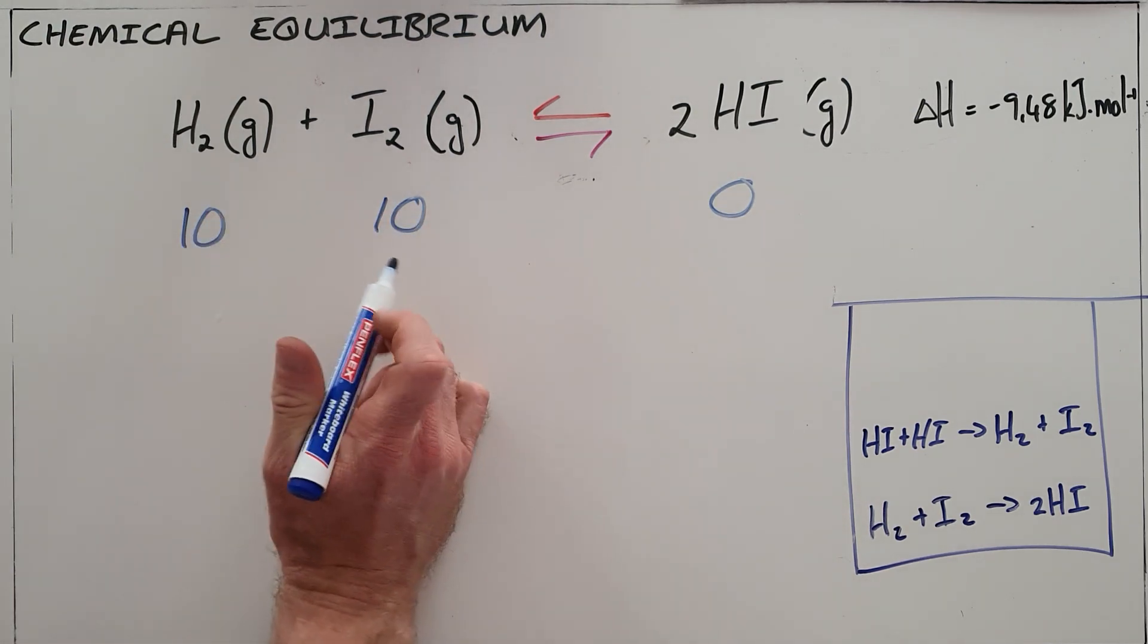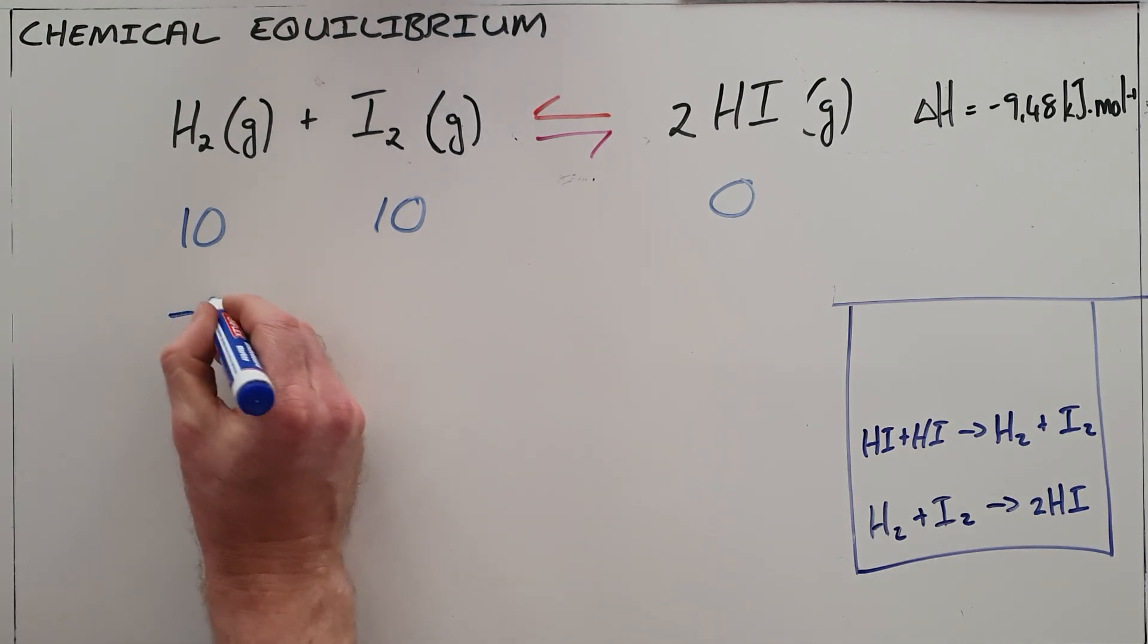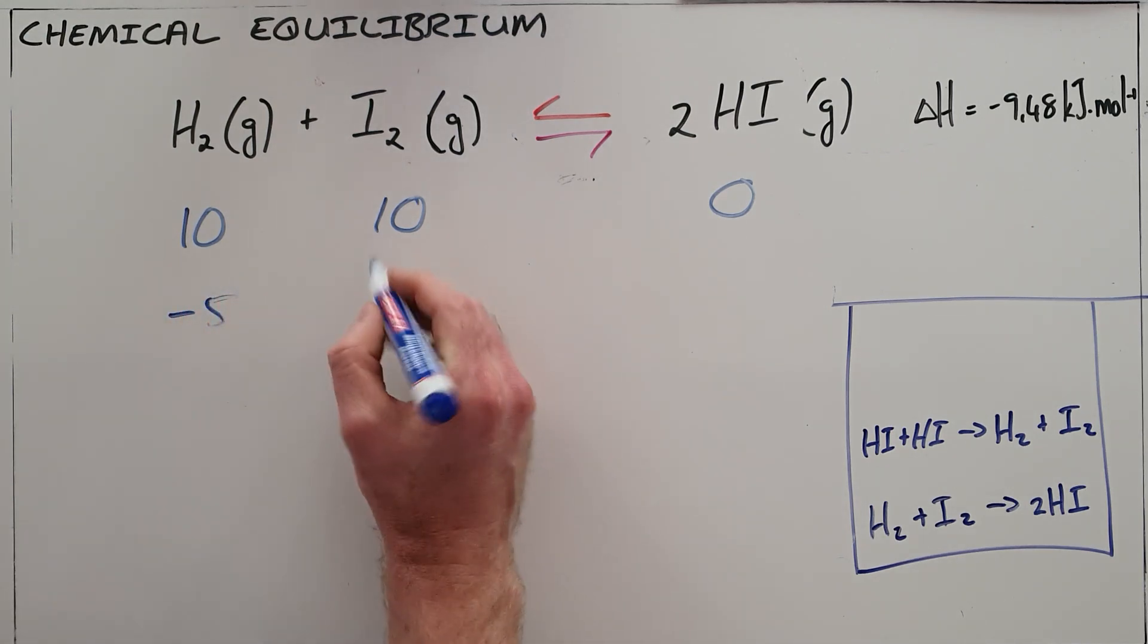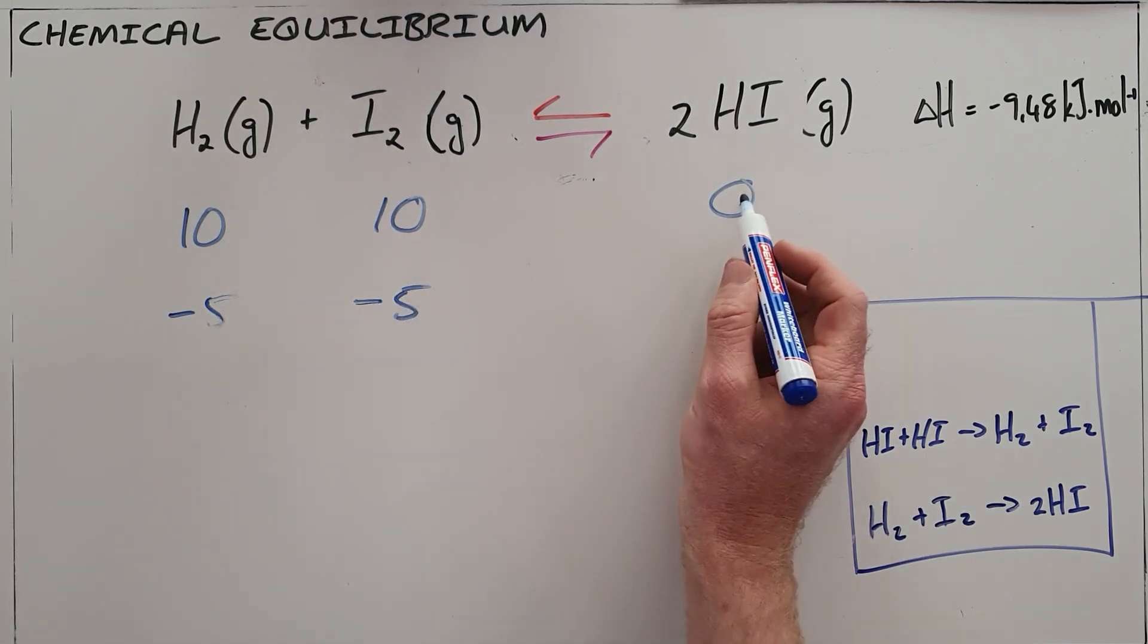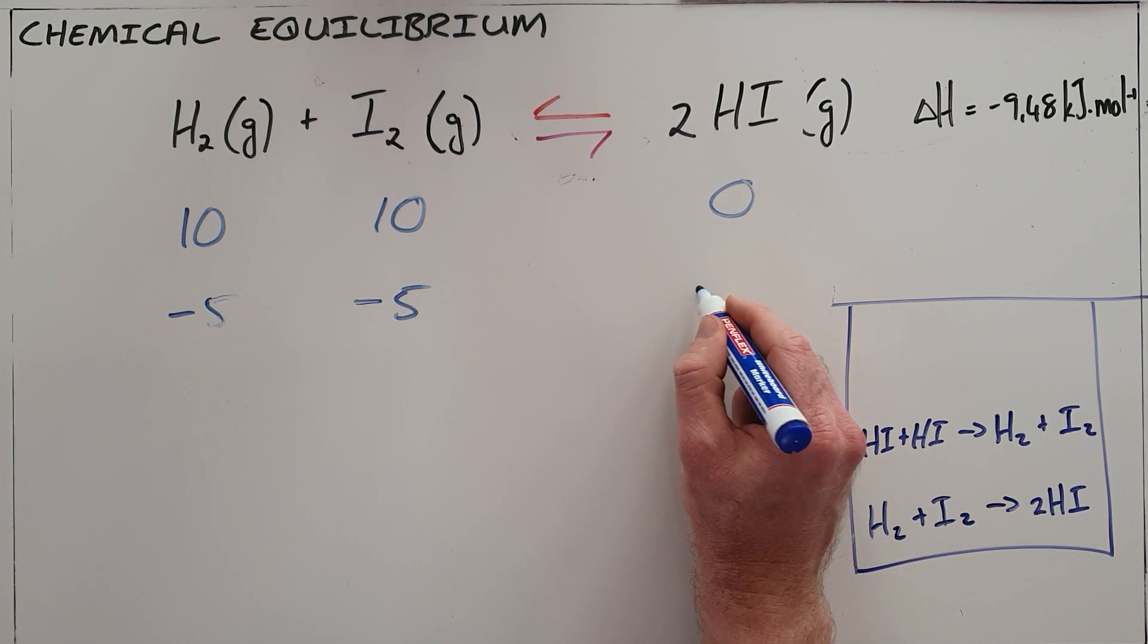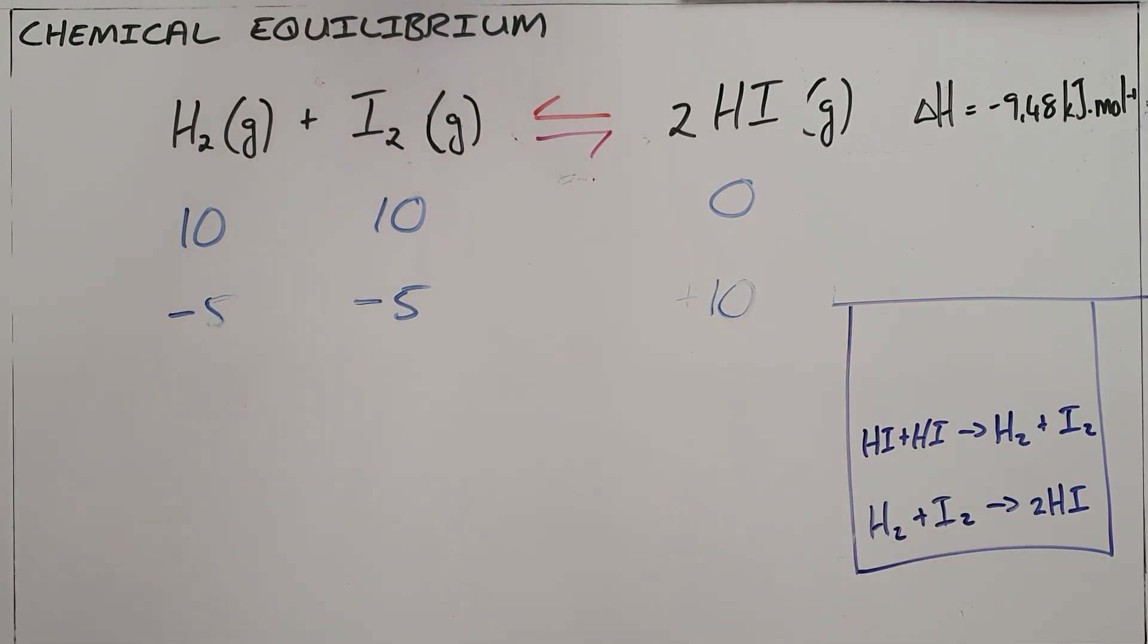We know that these react with each other in a ratio of one to one, so let's say that five hydrogen molecules react at the same time five iodine molecules react. We know that it produces twice as many hydrogen iodide molecules, which means that we produce 10 hydrogen iodide molecules.